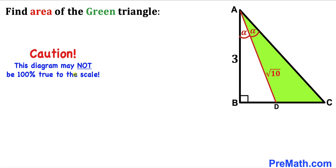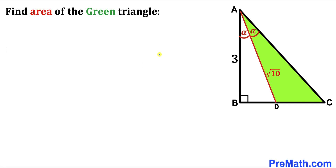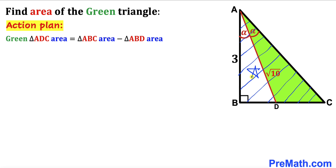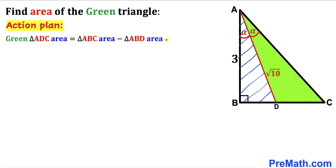Let's get started. Here's our action plan: we can observe that the area of the green shaded triangle ADC is equal to the area of the whole big triangle ABC minus the area of the white triangle ABD.